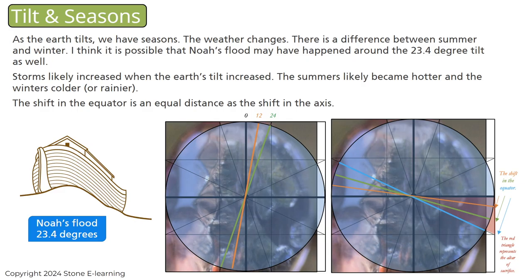As the earth tilts, we have seasons — the weather changes, and there is a difference between summer and winter. It is possible that Noah's flood may have happened around the 23.4 degree tilt as well. Storms likely increased when the earth's tilt increased. The summers likely became hotter and the winters colder or rainier. The shift in the equator is an equal distance as the shift in the axis.